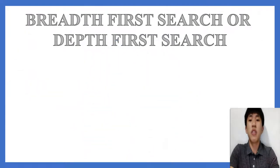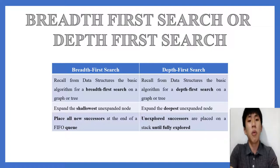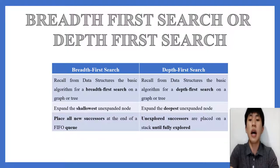For breadth-first search, recalled from data structures, it is the basic algorithm for BFS on a graph or tree. It expands the shallowest unexpanded nodes and places all new successors at the end of a FIFO queue. For depth-first search, also from data structures, it is the basic algorithm for DFS on a graph or tree. DFS expands the deepest unexpanded nodes, and unexplored successors are placed on a stack until fully explored.